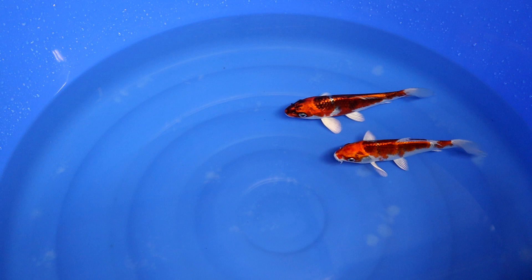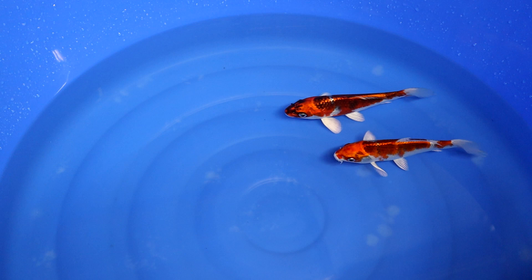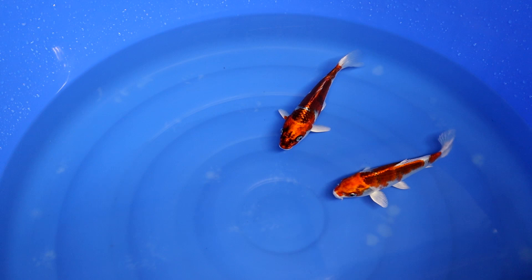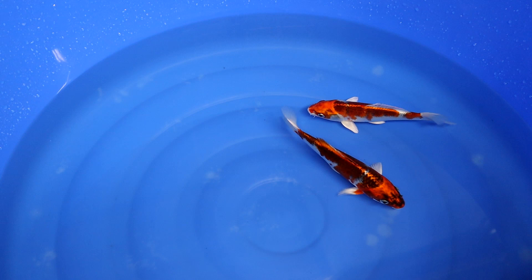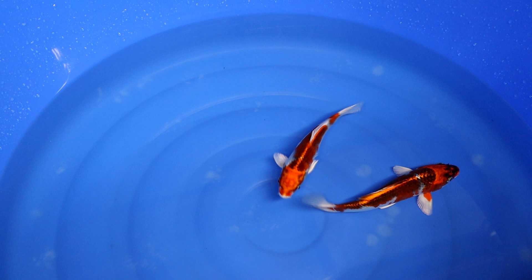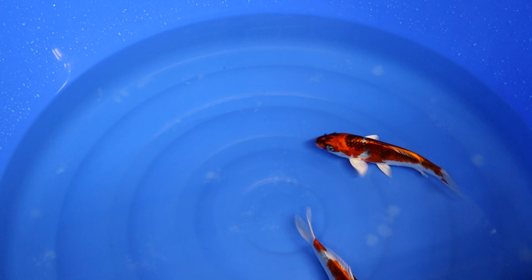When you want to select a Kujaku you always want to imagine how this koi is going to look like in the future. Because usually you just don't buy a koi for today, you buy it for a lifetime. And for that reason you want to make sure that it will develop even nicer in the next couple of years. So what I will do in this video is try to explain with some examples what aspects you want to look for when you select a Kujaku.